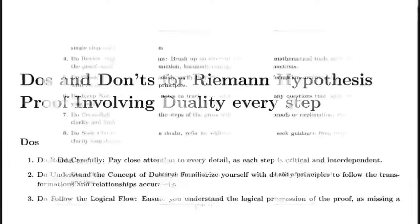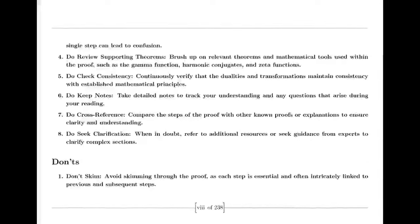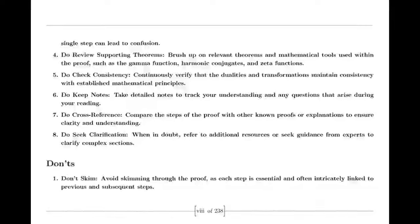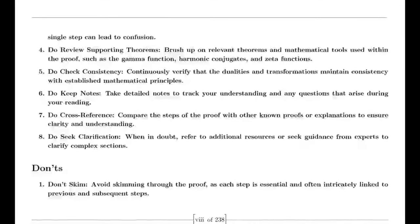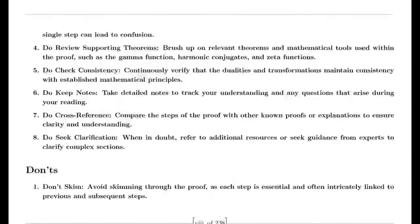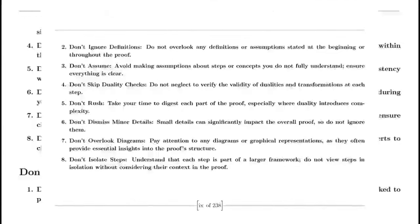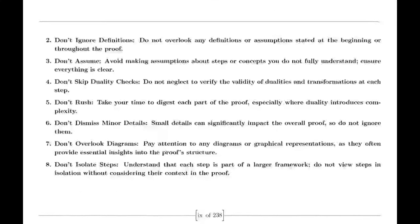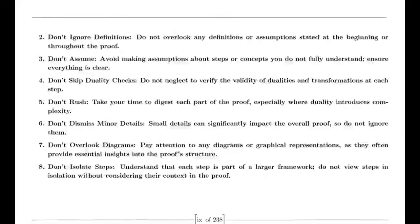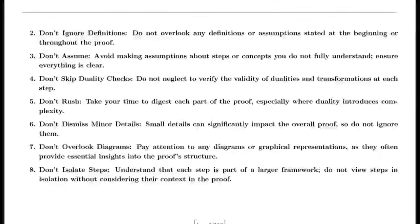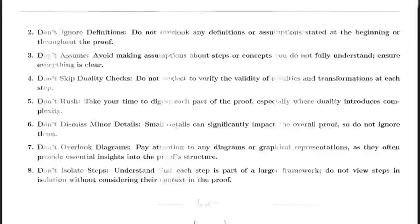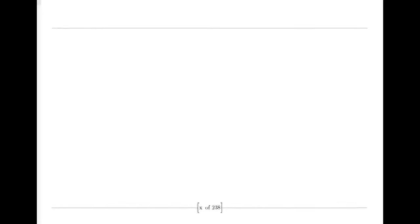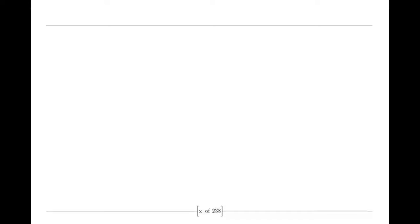Riemann's insights were not merely abstract — they opened a treasure trove of questions. He speculated about the zeros of the zeta function, points where the function takes the value zero. He famously conjectured that all non-trivial zeros lie on a critical line, a notion that would become one of the most famous unsolved problems in mathematics, known as the Riemann hypothesis.